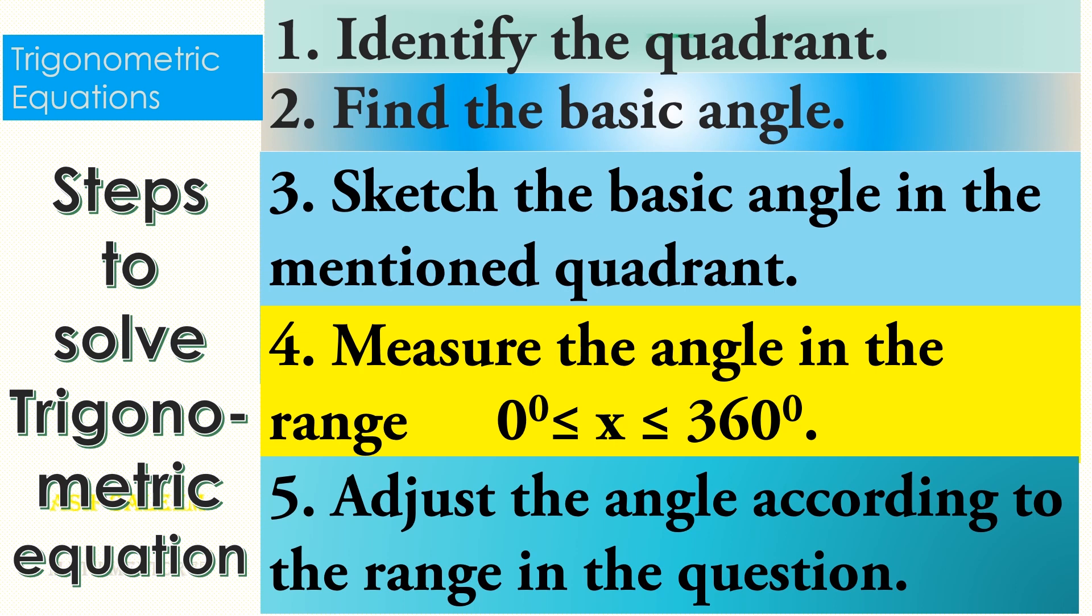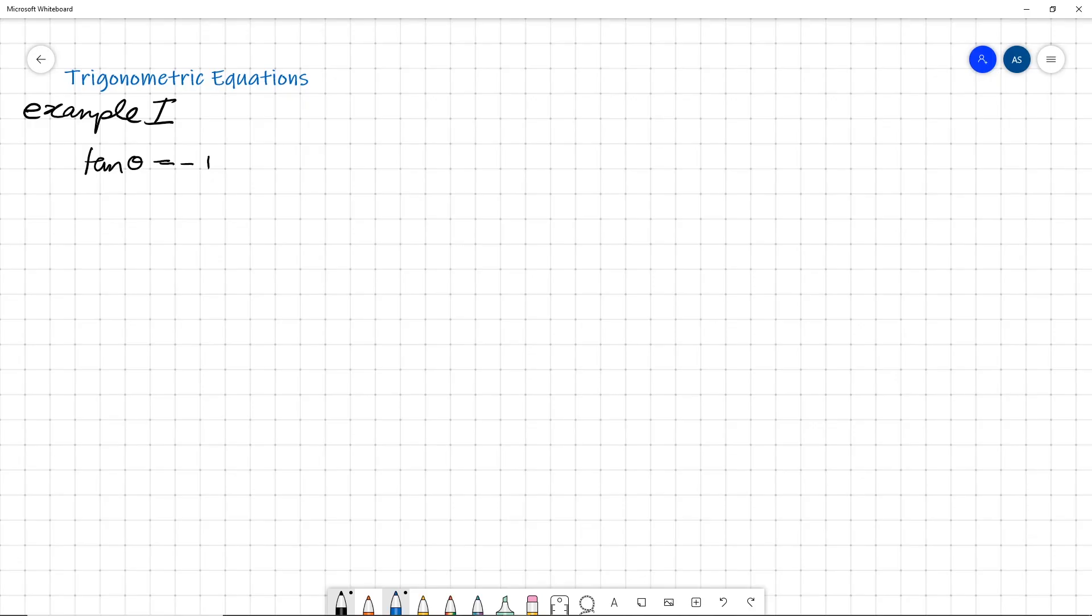Let's jump into it. The first step is to identify the quadrant. We know that tan theta is negative, so tan theta is negative in the second and in the fourth quadrant. We identify that theta is either in the second or in the fourth quadrant. This is the first step.